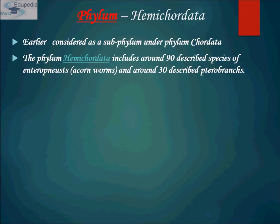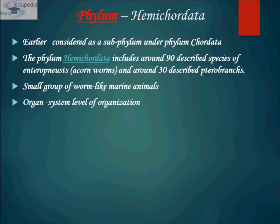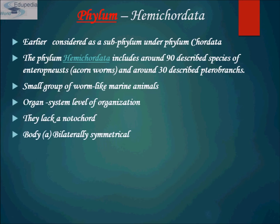Corn worms are large individuals that burrow through sediment like an earthworm, digesting organic material in the soil or feeding on suspended particles in the water. Pterobranches, on the other hand, form large colonies in which each individual is connected to another by stems. These creatures create their own homes — a series of tubes composed of collagen secreted by glands on their bodies.